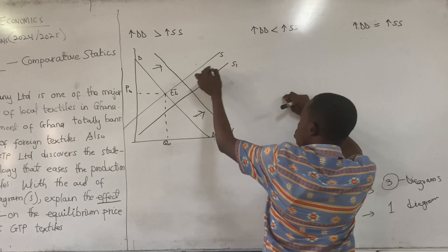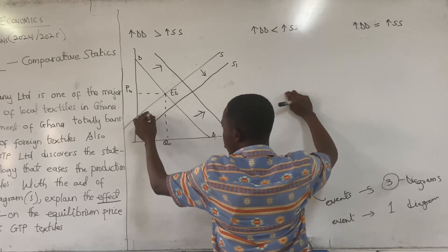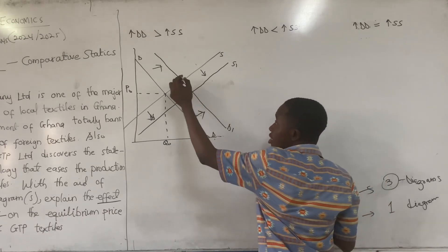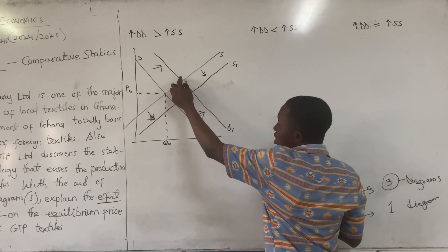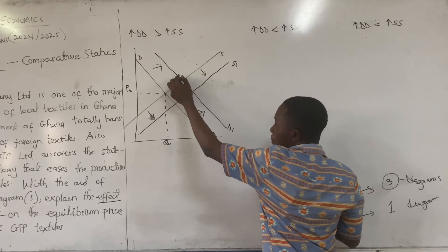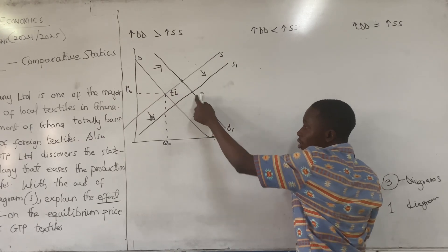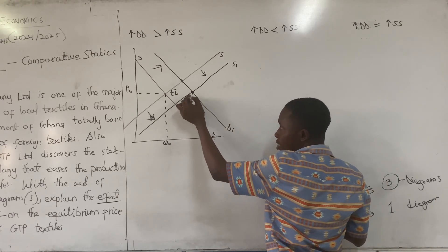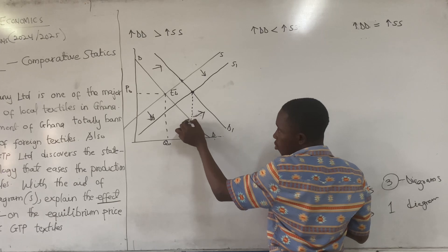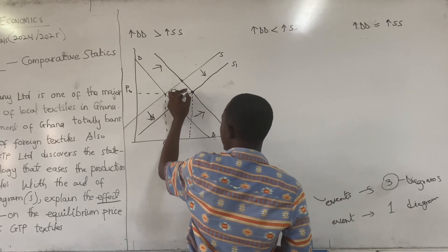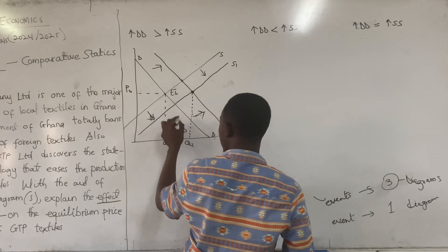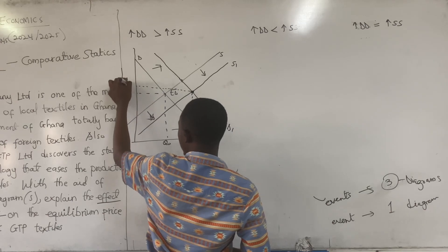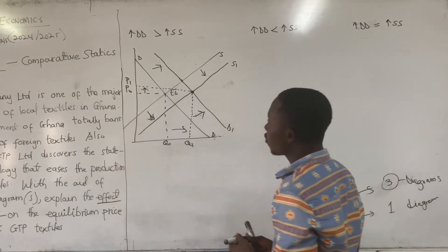So this is S1 — the supply increase. The next thing we do is find the point where the new curves are meeting. This is S1 and this is D1. The new supply function and the new demand function are meeting here, so we pick that new equilibrium point. This gives us Q1 as the new equilibrium quantity. That is what we get for the first diagram.